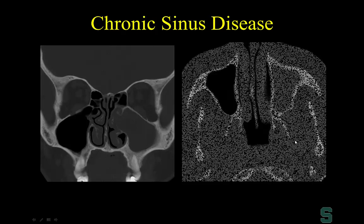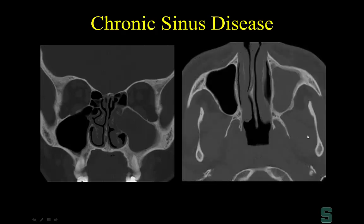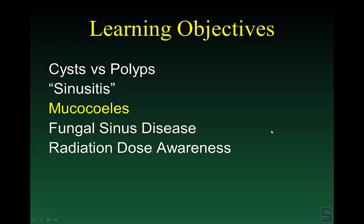In chronic sinus disease, we look for reactive hyperostosis — diffusely thickened walls of the sinus involving both anterior and posterior walls of the maxillary sinus, compared to the normal very thin bone. This finding tells us the disease has been present for a while, allowing us to differentiate acute from chronic sinusitis when asked.